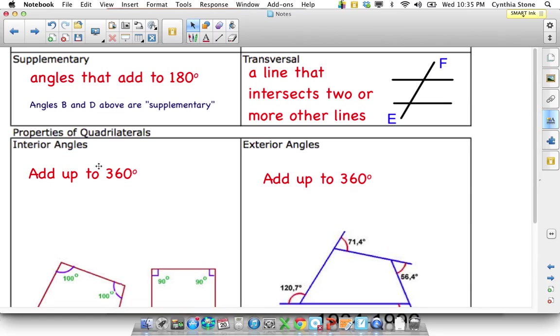The other term is transversal. It's a line. And in this case, I have line EF that intersects two other lines. So I have these two lines. They're not intersecting anything but this one. But EF intersects two different lines. That makes it a transversal.